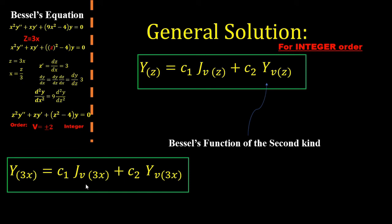Therefore we'll be able to write up the general solution for our differential equation, which is, right here, the c1 and c2 is just two simple constants. j, the Bessel function of the first kind, the y, the Bessel function of the second kind, and both of them based on 3x.